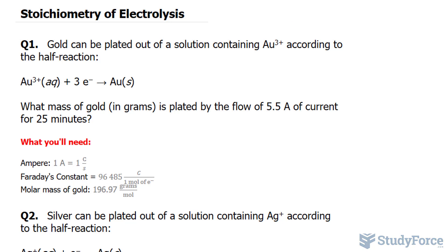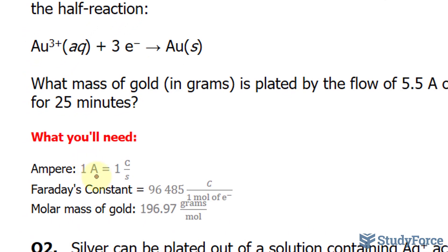Just to give you an idea of what's happening here, electricity is flowing through the solution containing gold ions. They want to know how much gold will be produced if this process continues for 25 minutes when the current is 5.5 amperes. Everything that we need to do this problem is shown underneath. Notice that I've written down that 1 ampere is equal to 1 coulomb per second, and by definition that's what current is, the amount of charge per unit time.